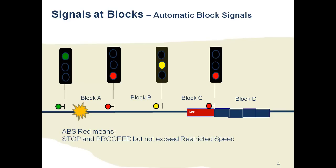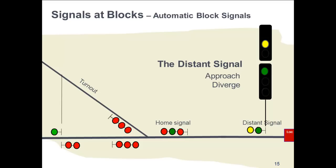ABS signals typically have one head and one lit light. Distance signals, however, typically have two heads. It is important to note the definition of signals in automatic block signals: a red signal typically means stop, and you are then authorized to proceed but not exceeding restricted speed, which is defined as 20 miles an hour and being prepared to stop within one-half your range of vision. Depending on whether one is in the route signaling or speed signaling world, there are some variations in signal aspects and their meanings.